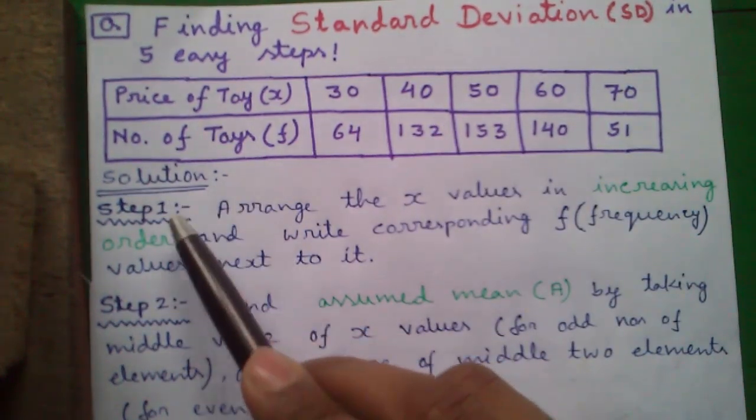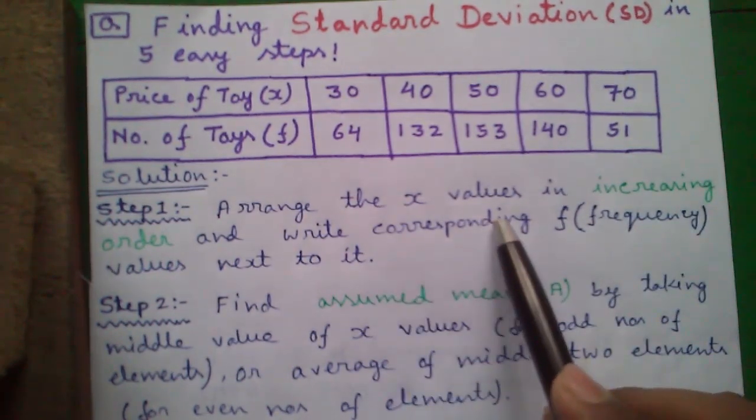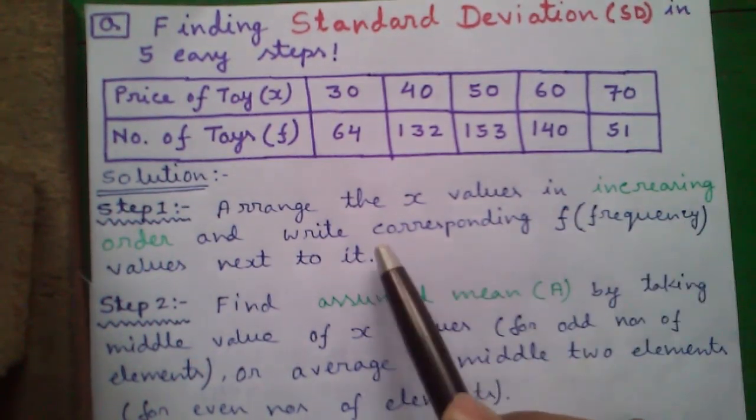So let's proceed to our solution. Step 1. Arrange the X values in increasing order and write corresponding F or frequency values next to it.